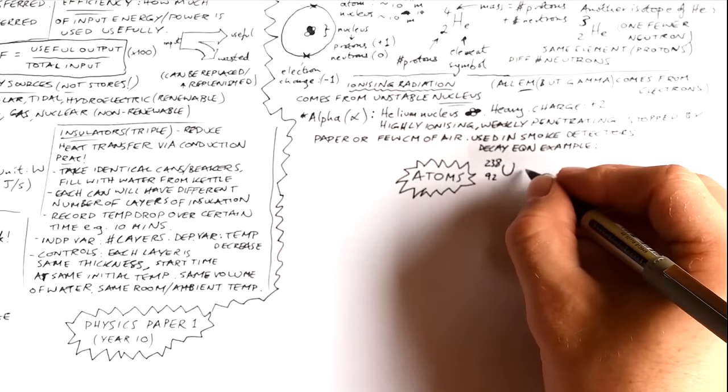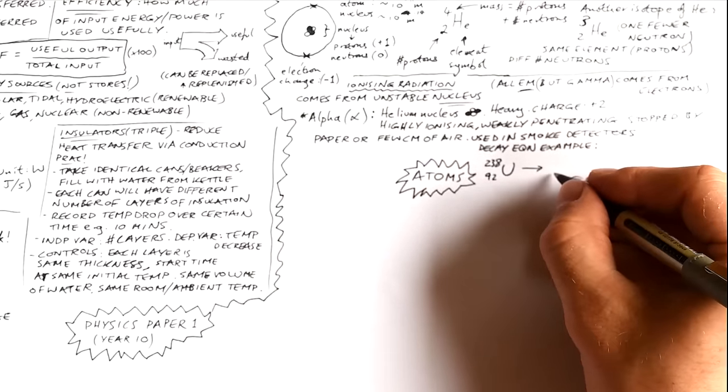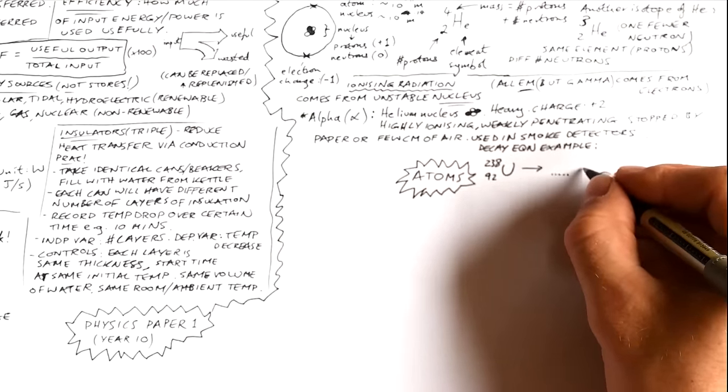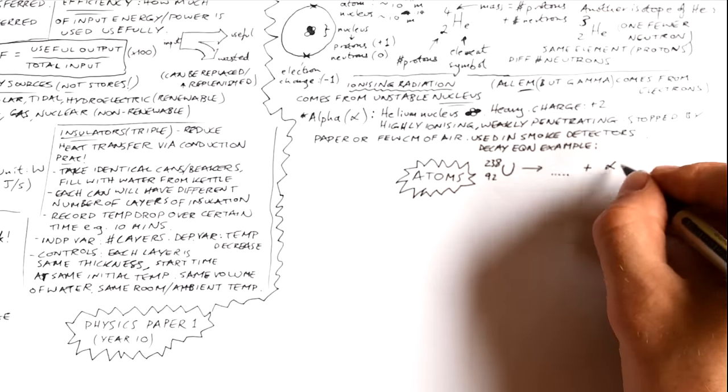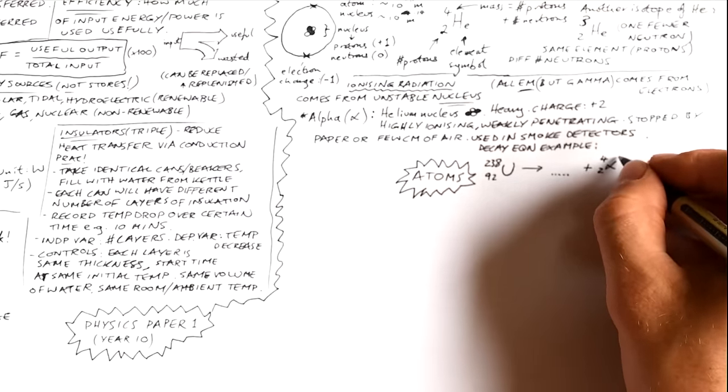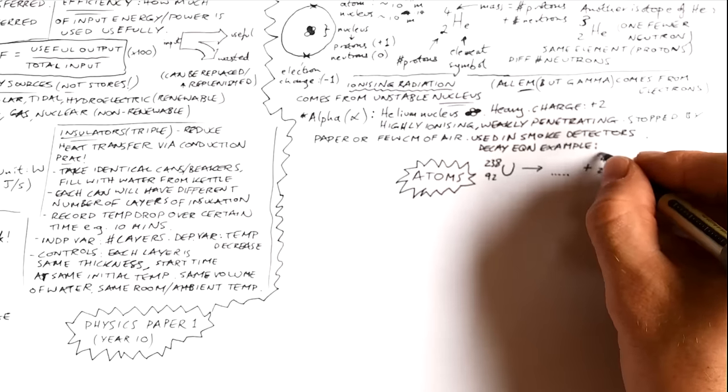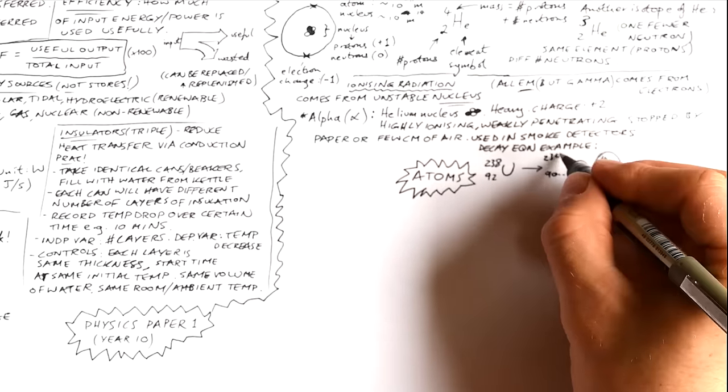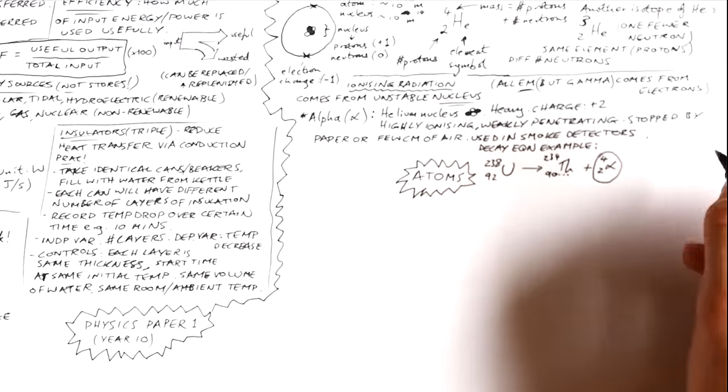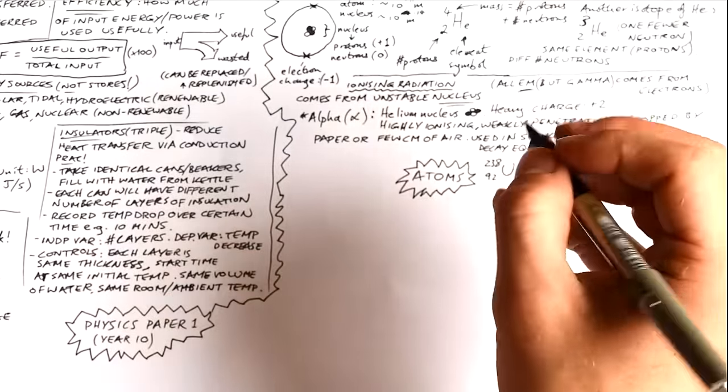Here's an example of a decay equation for alpha decay. Let's take uranium-238. Now we draw an arrow going to the daughter nucleus, the product that it makes, plus an alpha particle. That's four and two again, just like helium. And then from there, it's just a matter of taking the numbers away. 238 take away four, 92 take away two. And that leaves us with 234 and 90. Proton number of 90 is thorium. So we've made a new atom.